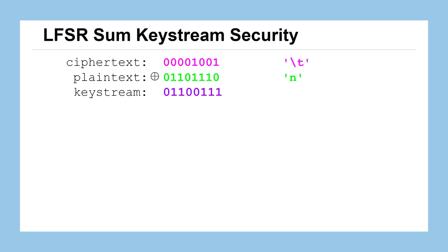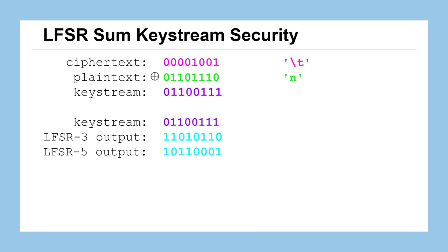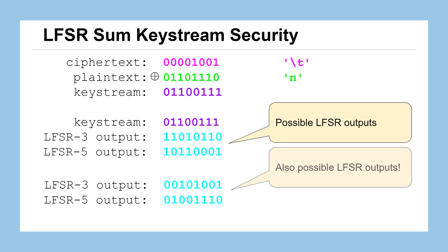If we have our keystream, here is a possible combination of LFSR-3 outputs and LFSR-5 outputs that would have generated that keystream if we were to XOR those together. If that was the correct possible pairing, we could work those individually back to get the seed values for the 3-bit and the 5-bit systems. But we don't know for sure that that's an actual correct output pairing, because here's yet another one.